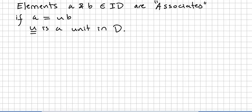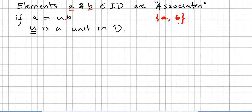A quick revision: elements A and B in an integral domain are called associates if A equals U times B, where U is a unit in D. If A equals a unit factor times B, we say that elements A and B are associates.